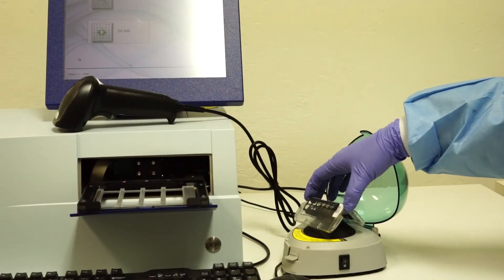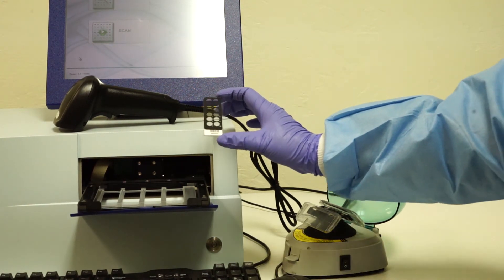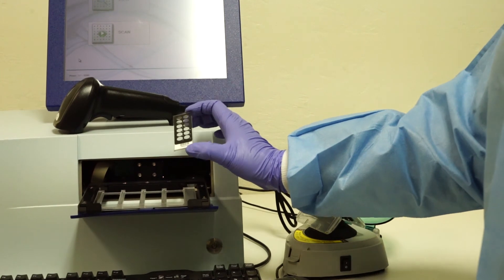Once the slide is dry, remove from the centrifuge and turn on the Sensivation imager. The slides will be loaded from left to right to read.